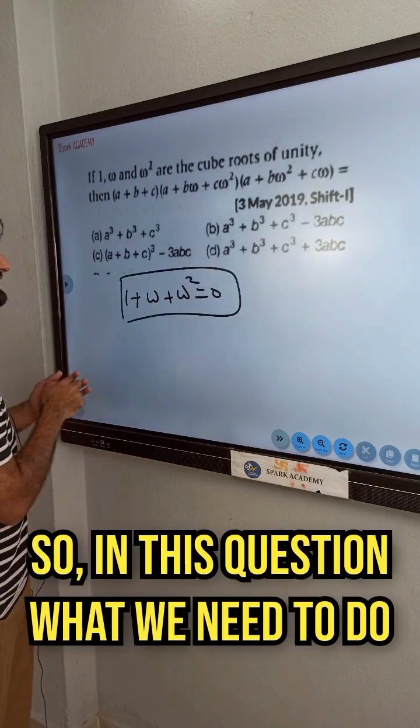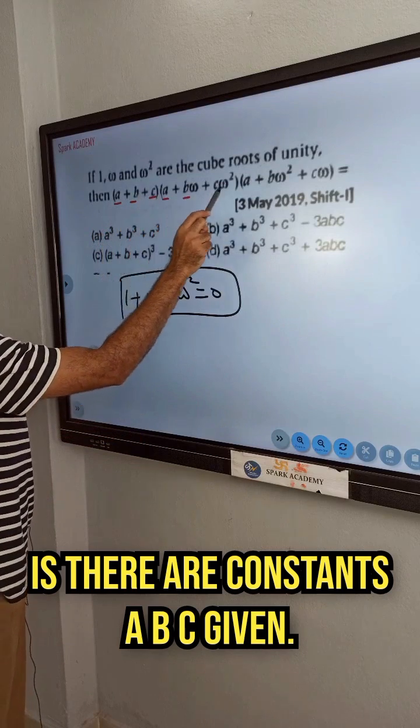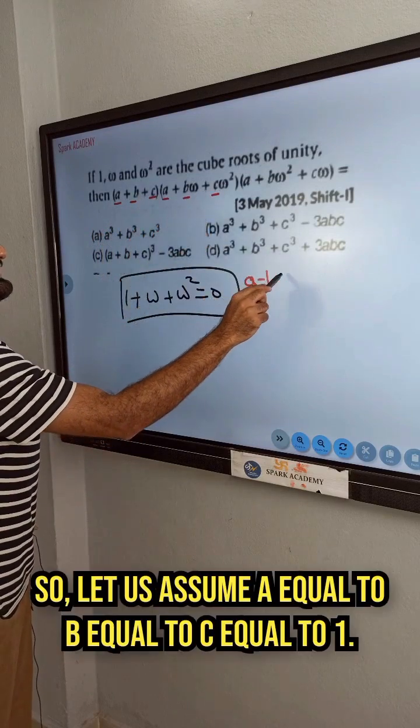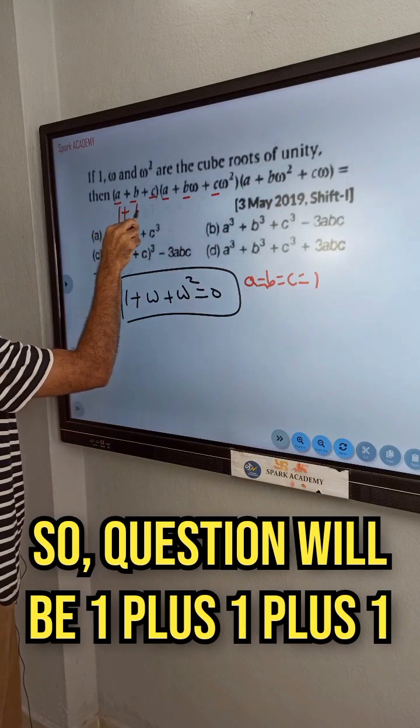So in this question what we need to do is there are constants a, b, c given. So let's assume a equal to b equal to c equal to 1. So question will be 1 plus 1 plus 1 into 1 plus omega plus omega square.